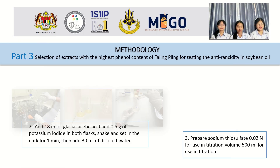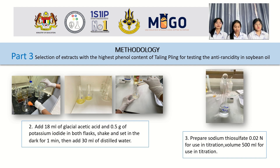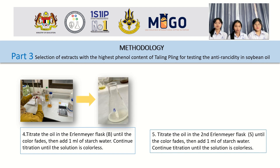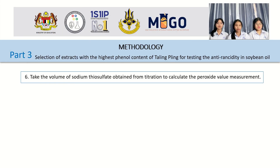Step 2: add 18 ml of acetic acid, add 0.5 grams of potassium iodide in both flasks, shake and set in the dark for 1 minute, then add 30 ml of distilled water. Step 3: prepare sodium thiosulfate solution 0.02 normal for use in the titration, volume 500 ml. Step 4: treat the oil in the conical flasks, then add 1 ml of starch indicator. Continue titration until the solution is colorless. Step 5 and 6: treat the oil in the second conical flasks, then add 1 ml of starch indicator. Continue titration until the solution is colorless. Step 6: record the volume of sodium thiosulfate solution obtained from the titration to calculate the peroxide value in meq/kg. The peroxide value can be obtained from this formula.